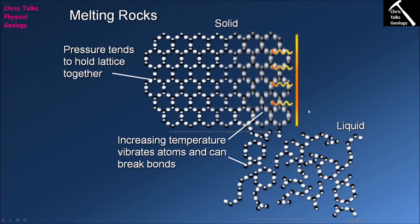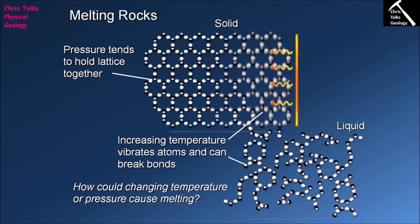So heating is clearly one of the ways which we can encourage these bonds to break, but is it the only way? Can we change other things and thereby encourage a rock to melt? Let's find out.